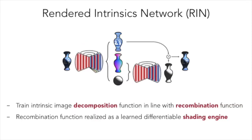Our contribution is a model that can improve its intrinsic image representations from unlabeled data. We do this by modeling not only the image decomposition function, but also the recombination function. A learned rendering engine uses the predicted intrinsic images to reconstruct the input. By imposing minimal extra structure in the renderer, this reduces to predicting the shading from a shape and lighting condition. Both the decomposition function and the learned shader are realized as convolutional autoencoders with skip layer connections.